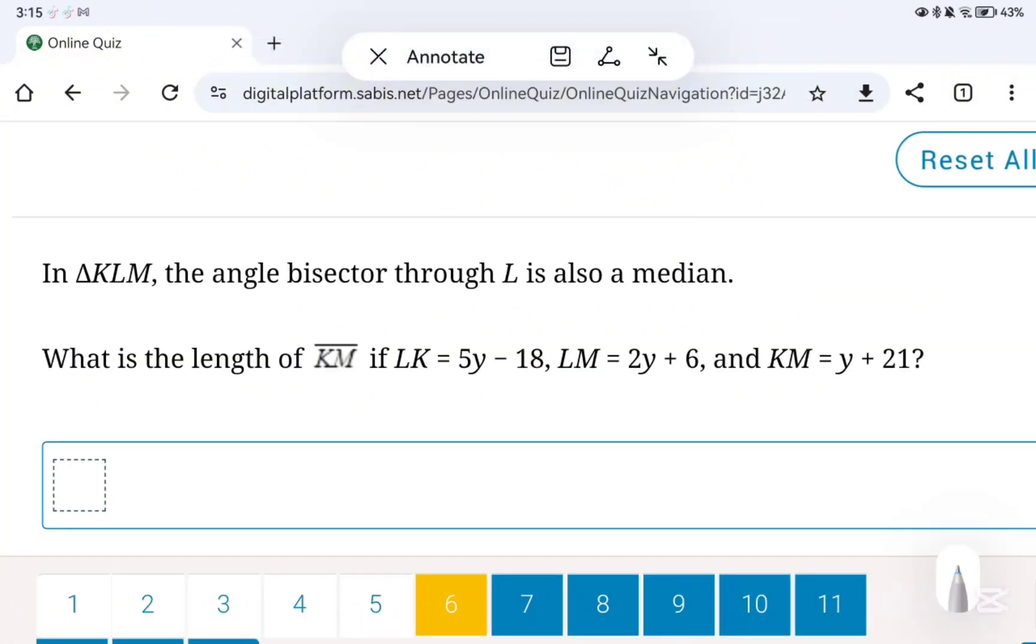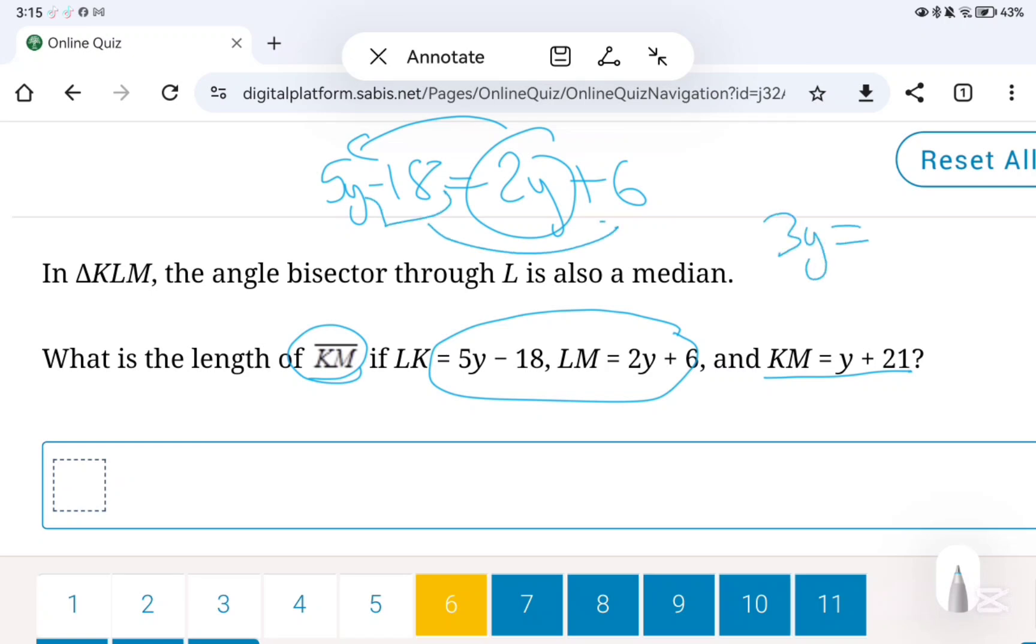So let's do this again. The length of KM, which means we are going to use LK and LM, so we make them equal to each other and then move y to one side and the numbers to the other. And now y equals 8, so then KM is 8 plus 21, which means KM equals 29.